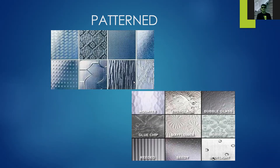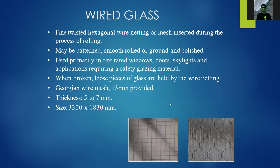Wired glass has fine twisted hexagonal wire netting or wire mesh inserted during the rolling process. It may be patterned, smooth rolled, ground, or polished. Used primarily in fire-rated windows, doors, skylights, and applications requiring safety glazing. When broken, loose pieces are held by the wire netting. Georgian wire mesh is about 13 millimeters, thickness is about 5 to 7 millimeters, and sizes vary from 3.3 meters to 1.83 meters (1830 millimeters).